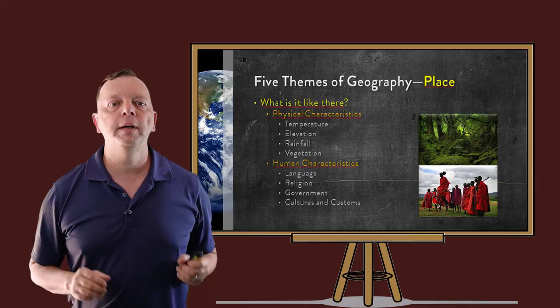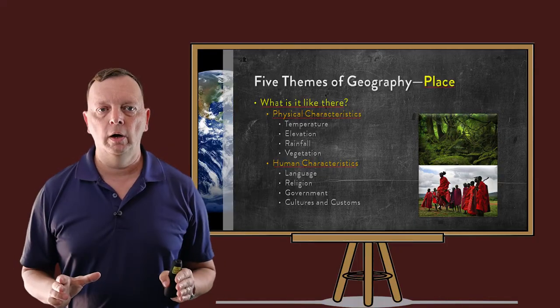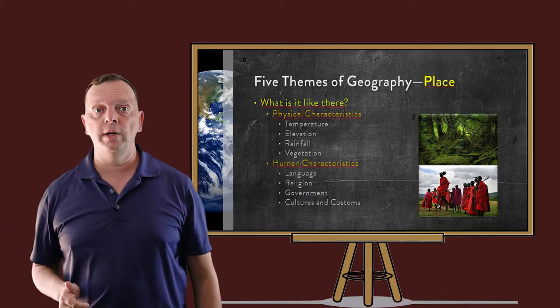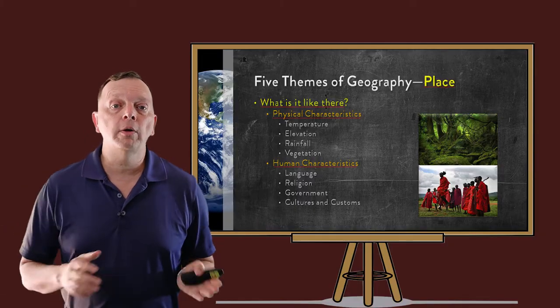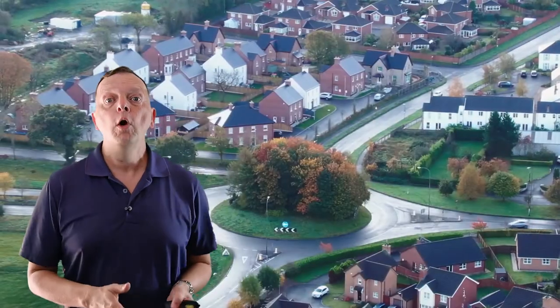The next theme of geography is place. Place answers the question of what is it like here. This is where a geographer starts to look at those physical and human characteristics. When we talk about the physical characteristics of a place — such as its climate, weather, whether there are mountains, deserts, what type of vegetation — then we're talking about the theme of place. Likewise, when we discuss who lives there, what language they speak, what are the customs, what type of government they have, and other human characteristics, we are also using the theme of geography of place.